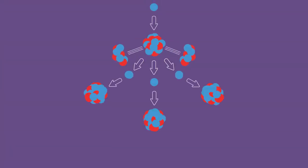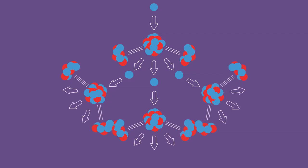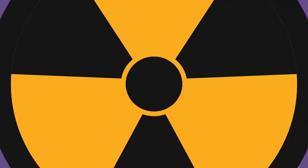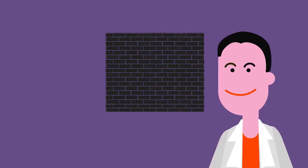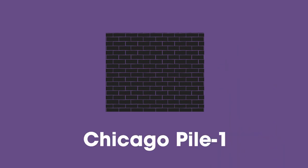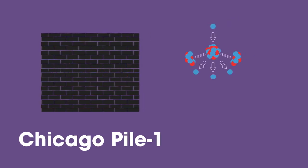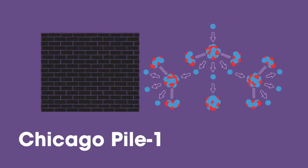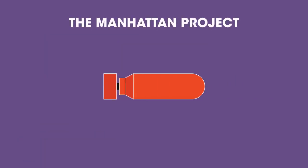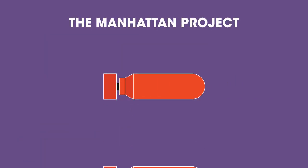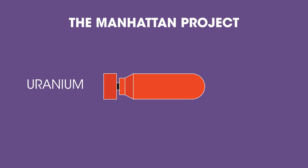The discovery of nuclear fission was only the beginning of the nuclear age. It was Enrico Fermi who built the world's first nuclear reactor, named Chicago Pile 1, which went critical in late 1942, showing that a controlled chain reaction was possible. The Manhattan Project then led to the rapid development of fission bombs based on uranium and plutonium in 1945.